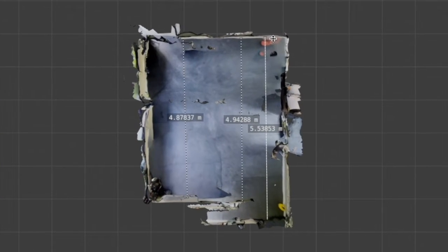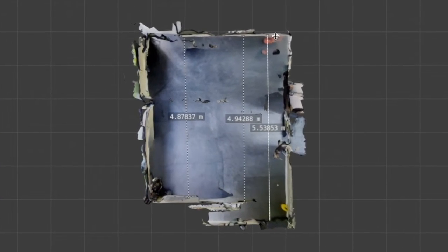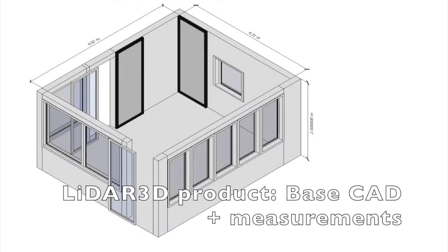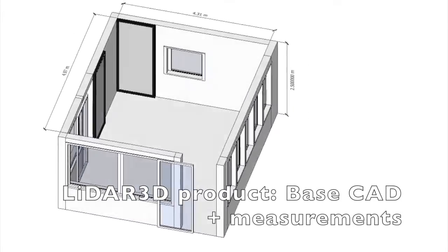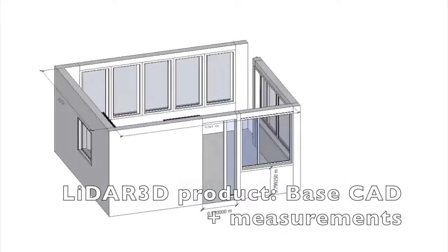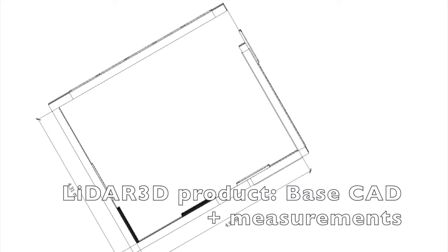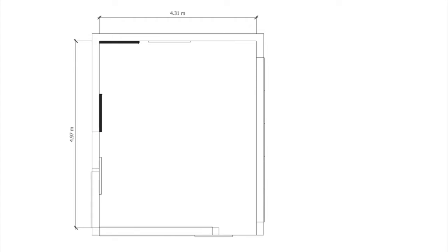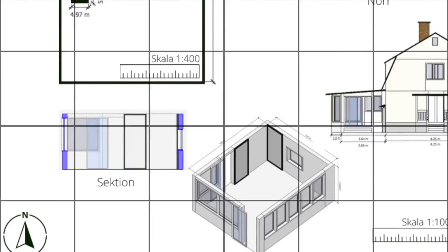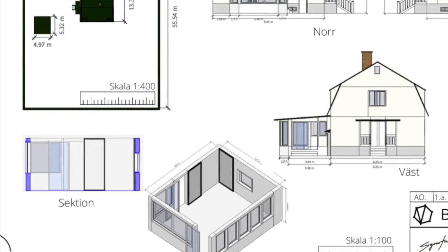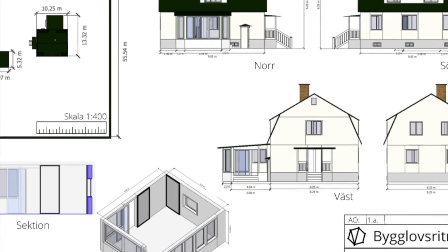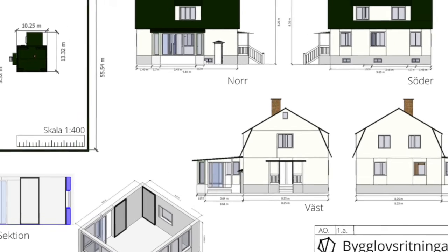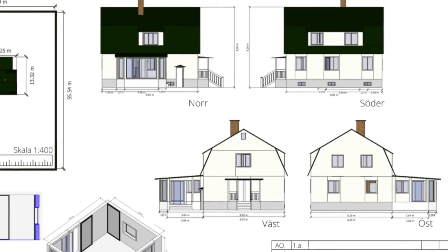Our in-house team of architectural 3D modelers can adjust the measurements in the final delivery based on your input. This allows you to use the fastest capturing method and, with just some minor checking on your side, you still get a delivery with the accuracy level needed for your project. Here is an example of 2D and 3D drawings based on LiDAR scans captured by one of our customers in Sweden and produced by us at LiDAR 3D.